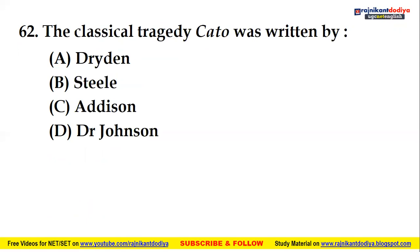Was it Dryden, Richard Steele, Joseph Addison, or Dr. Samuel Johnson? You can comment in the comment box. The classical tragedy Cato was written by option C — Addison. Joseph Addison was the writer of this tragedy Cato.